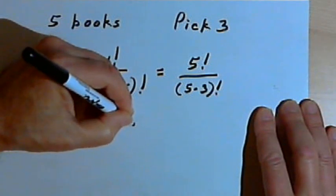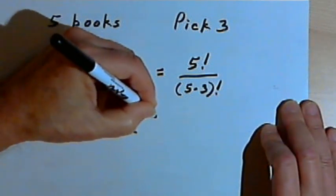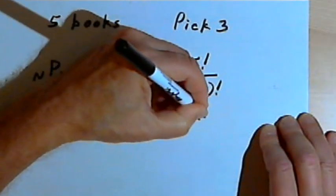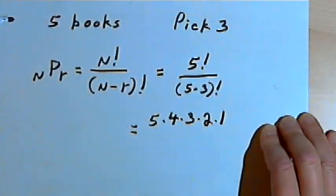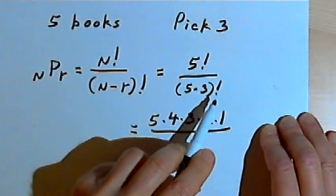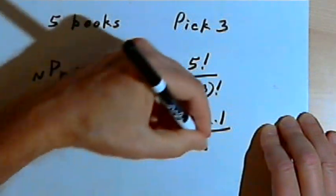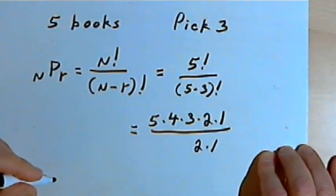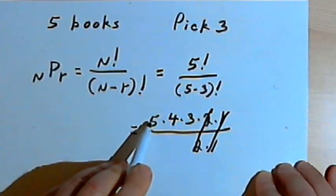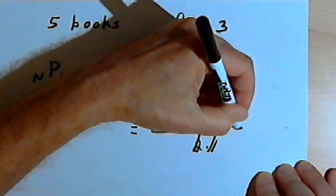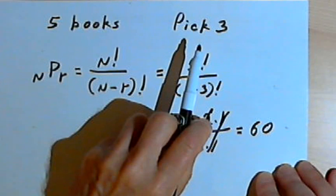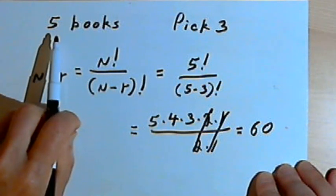And then once again, we could put this in a calculator, or we could just expand 5 factorial to 5 times 4 times 3 times 2 times 1. And the 5 minus 3 factorial, 5 minus 3 is 2, so 2 factorial is just 2 times 1. We could then cancel out the 2's, cancel out the 1's, we would have 5 times 4 times 3, or 60 different 3-book permutations out of a total of 5 books.